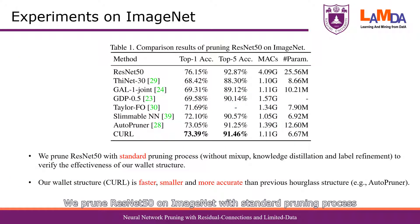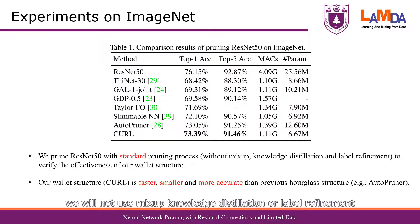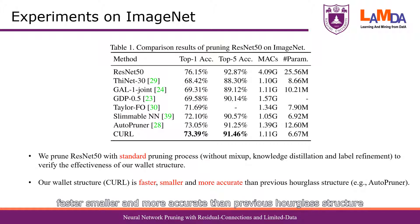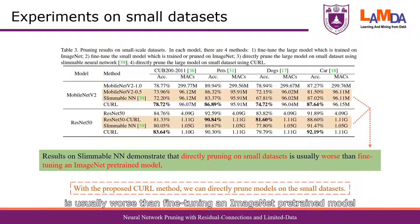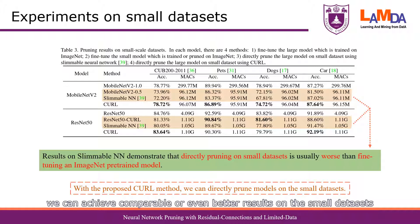We prune ResNet-50 on ImageNet with a standard pruning process to verify the effectiveness of our novel structure — that is to say, we will not use mixup, knowledge distillation, or label refinement. Experimental results show that our method is faster, smaller, and more accurate than the previous hourglass structure. We then study the performance of our method on small datasets. The highlighted results demonstrate that directly pruning on small datasets is usually worse than fine-tuning an ImageNet pre-trained model. With our method, we can achieve comparable or even better results on small datasets, which is very useful in many real-world scenarios.